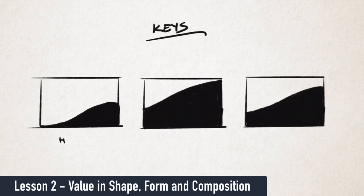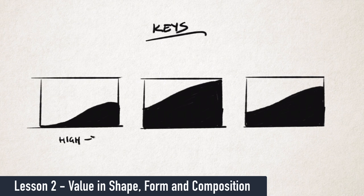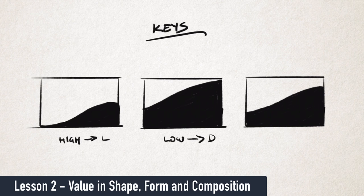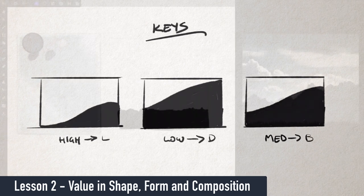A high key painting is a painting that leans towards being a predominantly light composition, whilst a low key painting is one that leans towards a predominantly darker composition. A medium key is one that is roughly balanced between the two.